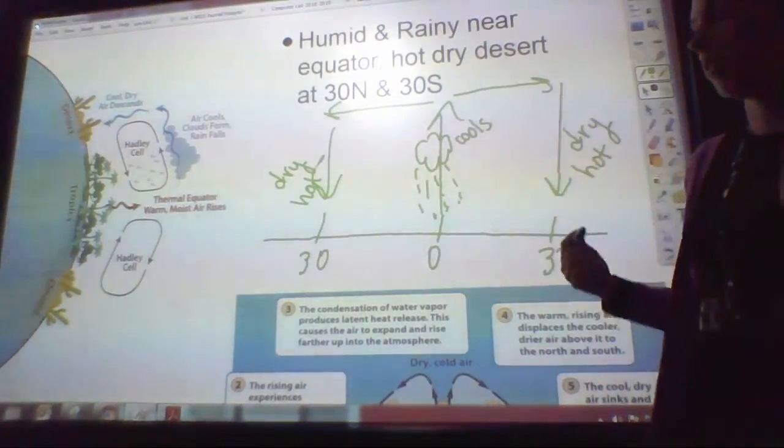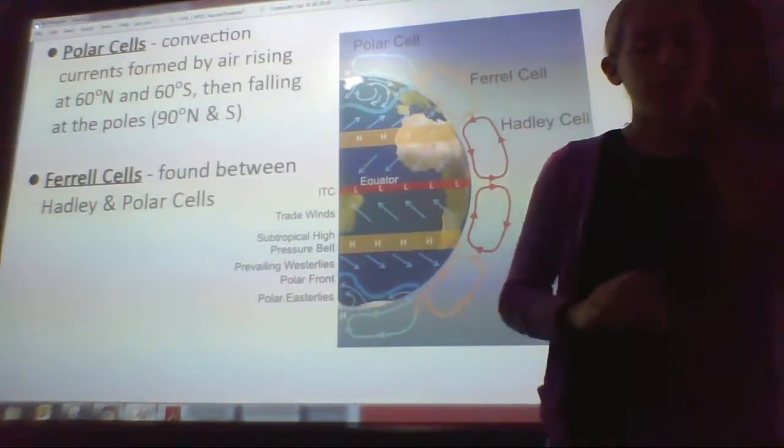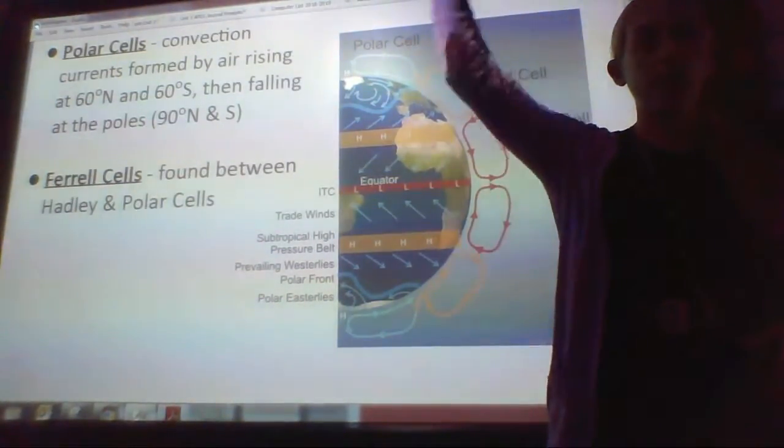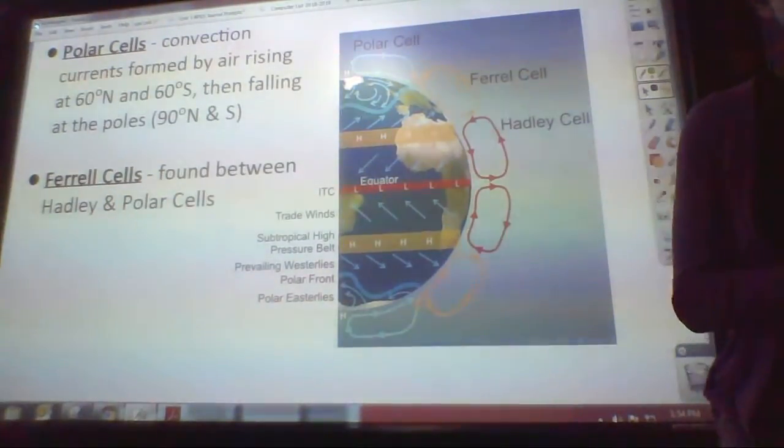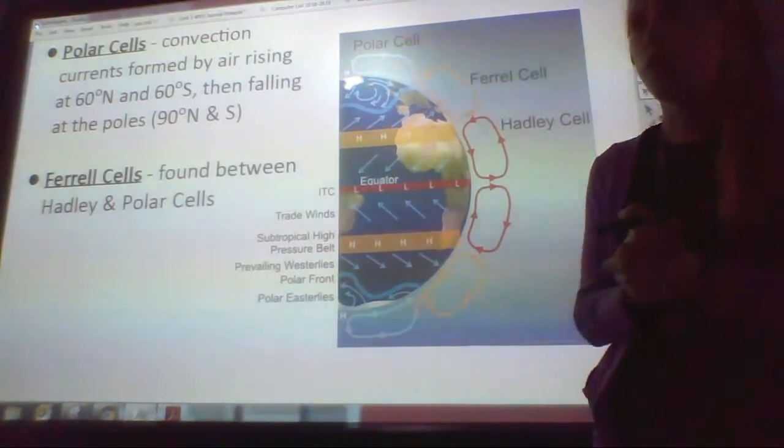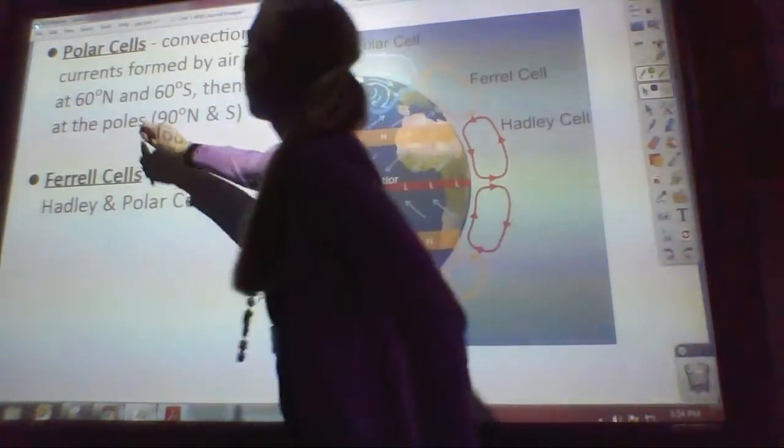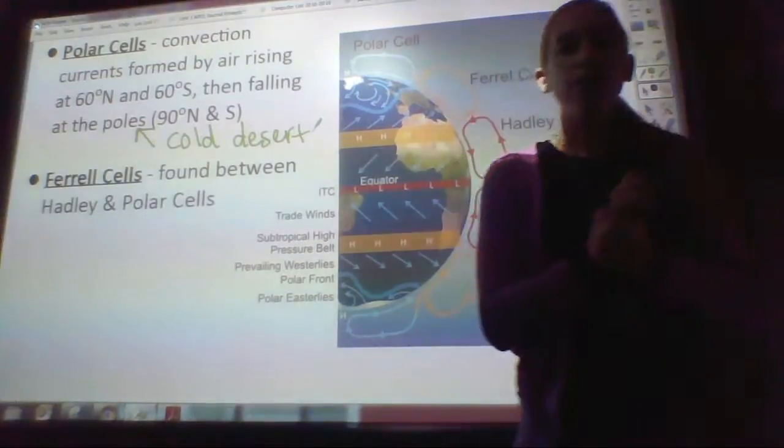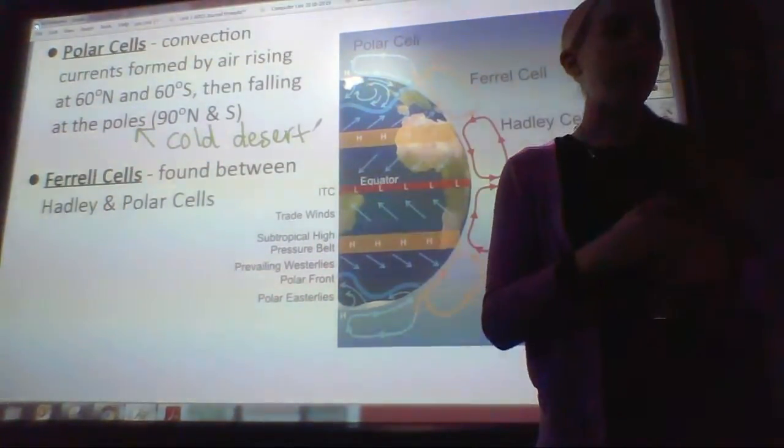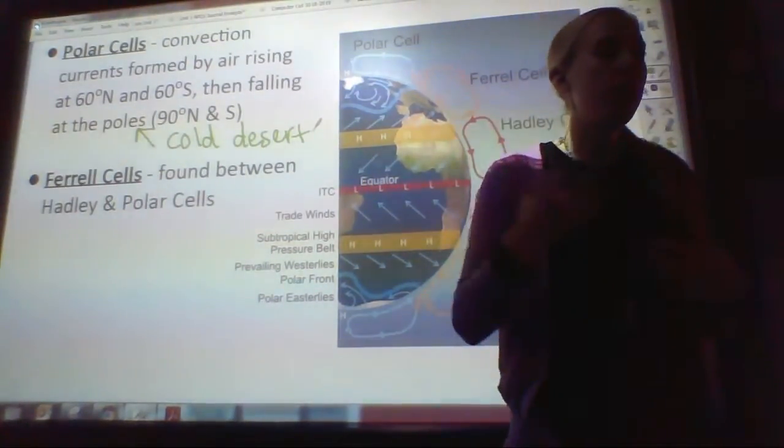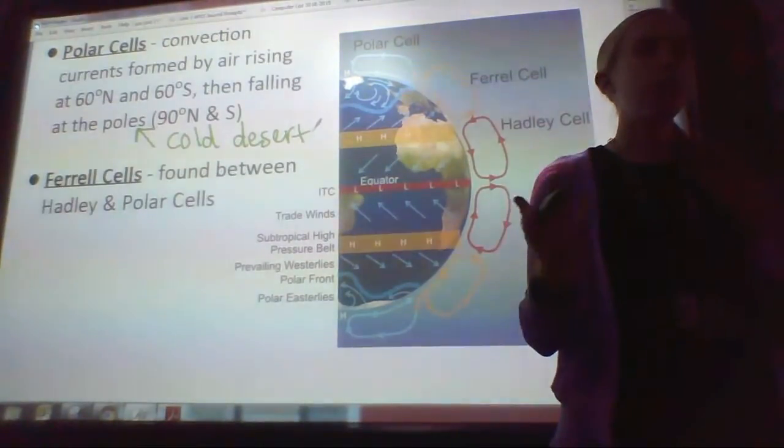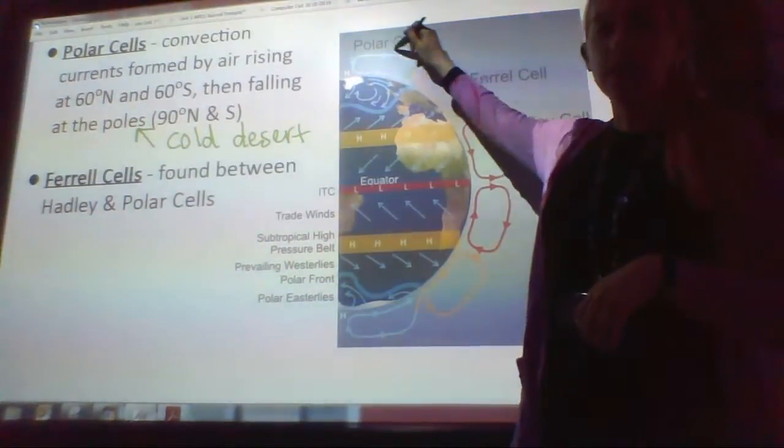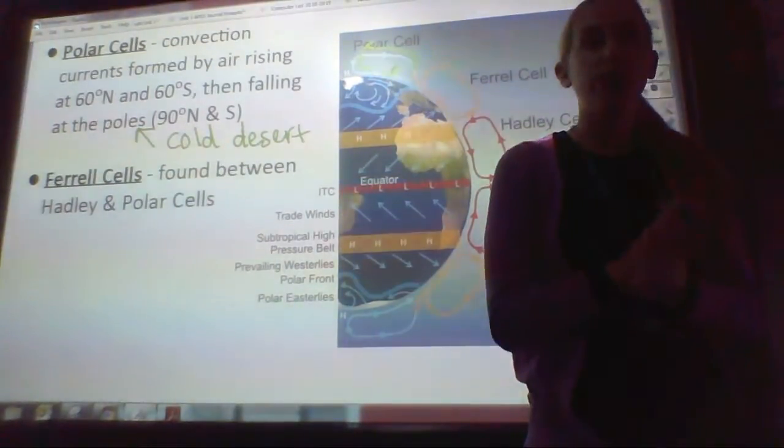All right, so these are called Hadley cells, named after a guy. They're super important, probably the most important of the cells, but there are other cells as well. Flip to the next page. We get polar cells. These are at the poles. They're the same type of currents where our air rises, comes back down. The poles are called cold deserts.